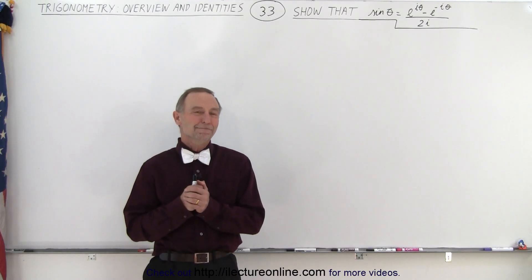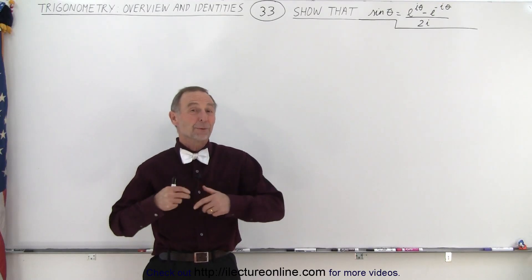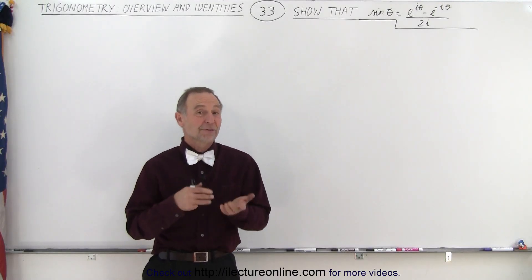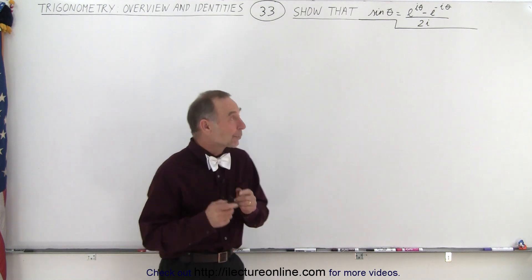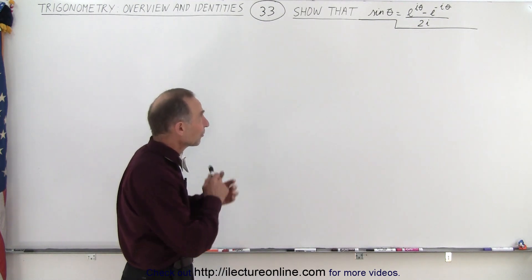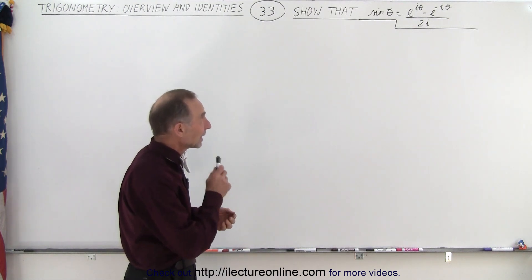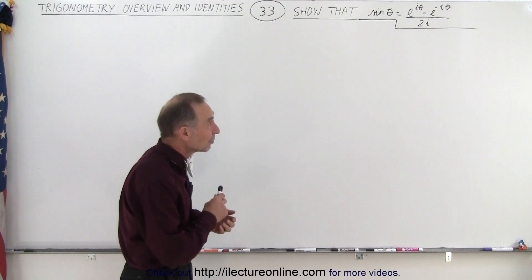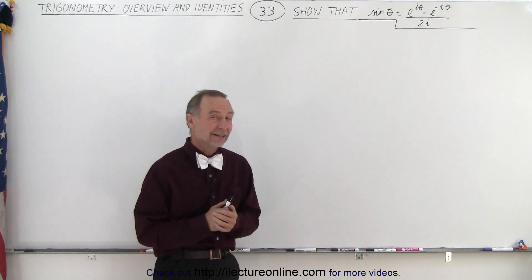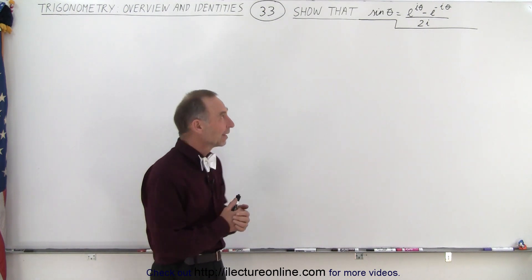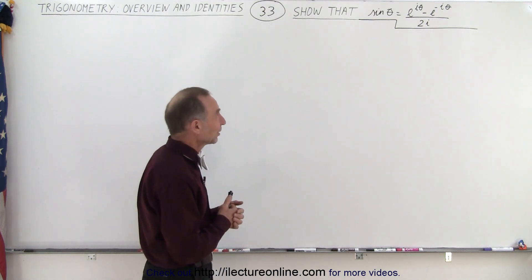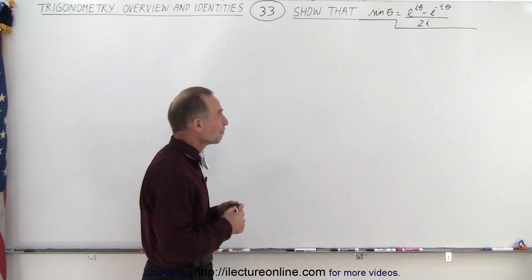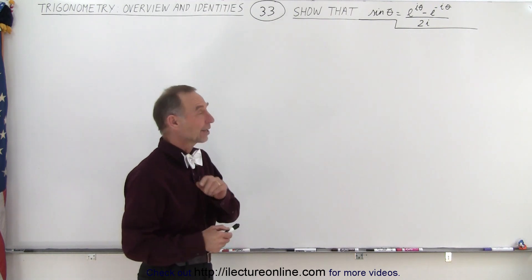Welcome to iLecter Online. Now we're going to reverse what we did in the previous video. Here we're going to show that the sine of theta is equal to e to the i theta minus e to the minus i theta, divided by 2i. And you might look at that and go, how in the world could that be? Well, let's take a look.